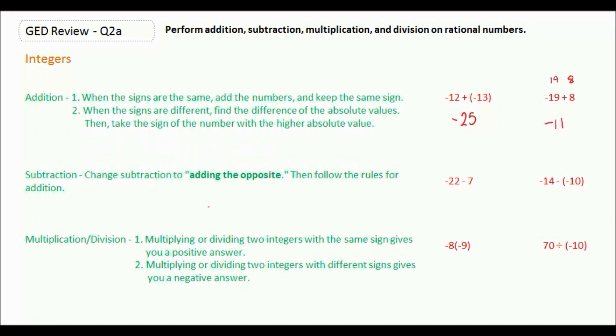Subtraction: we want to change to adding the opposite, then follow the rules for addition. So negative 22 minus 7 can be rewritten as negative 22 plus negative 7. Our first number stays the same, we change our subtraction to addition, and we take the opposite of positive 7, which is negative 7. Now since the signs are the same and we're adding, we add them together and we get negative 29.